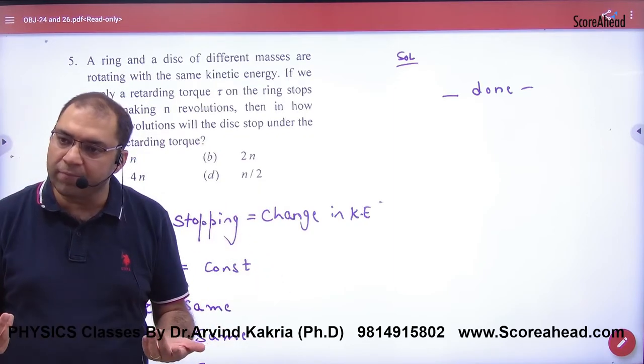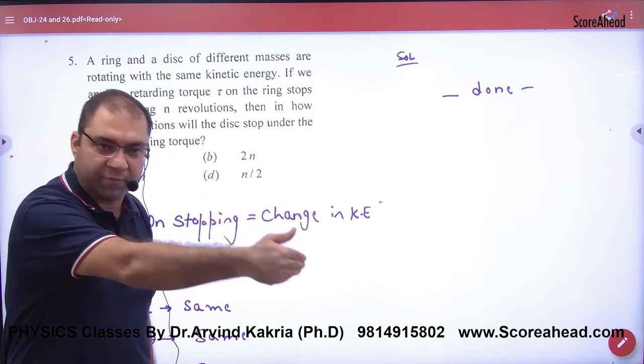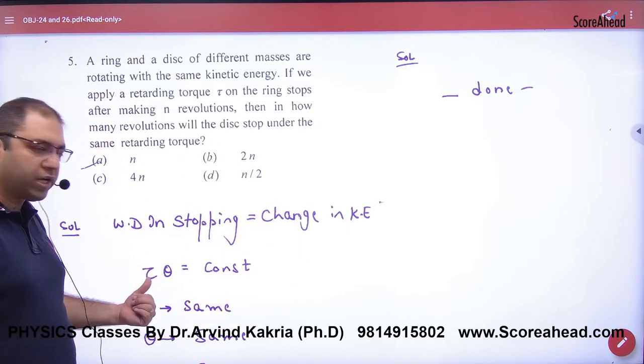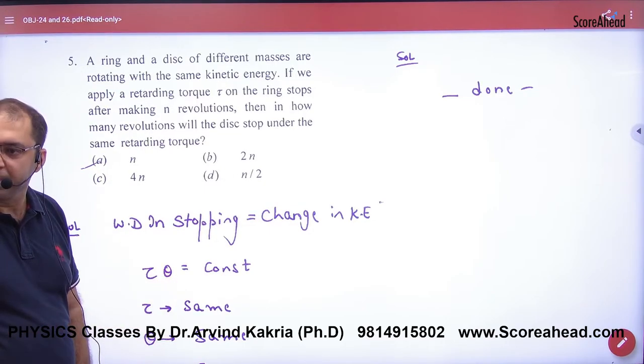So the right-hand side is the same. So the left-hand side will be the same. The work done formula was the same. What was done in linear motion? Force into displacement. Here, the force is the torque. The torque into θ is constant.